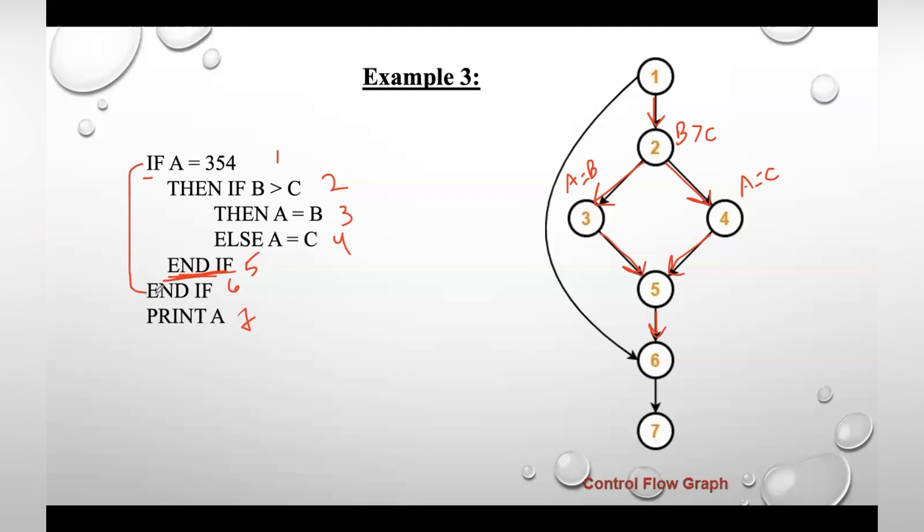So here six indicates the second end if and finally print A. This is nothing but your seventh block. After drawing the flow graph, step two is we need to calculate cyclomatic complexity.